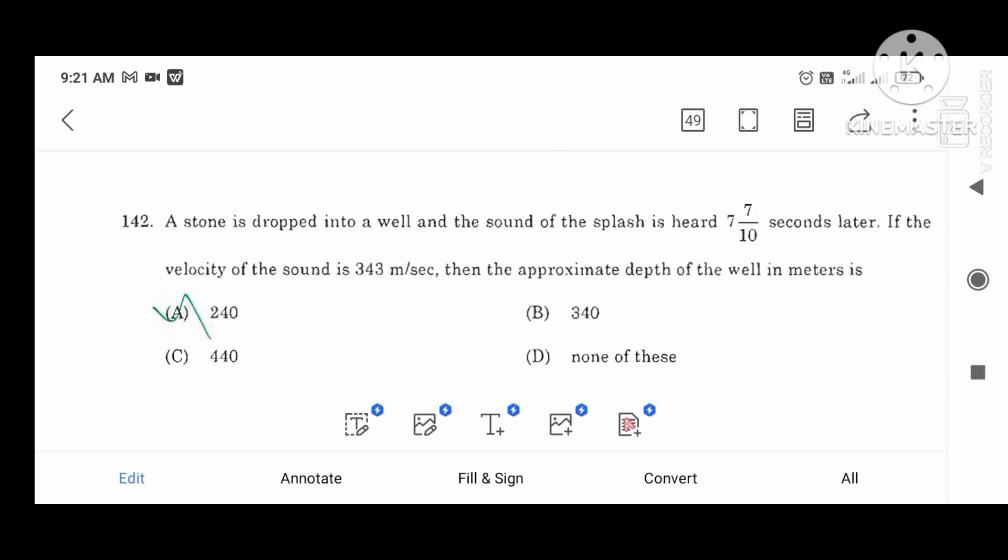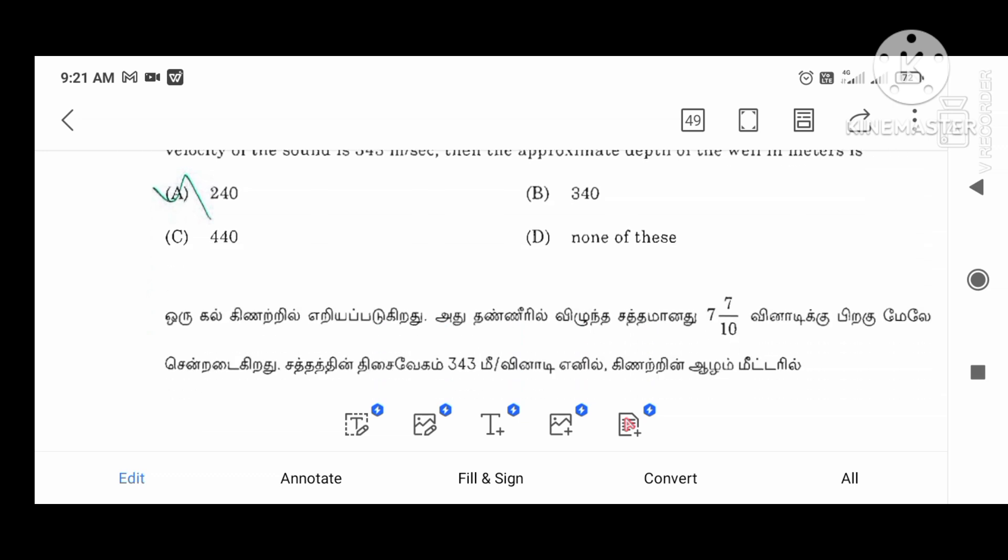And the stone is dropped into the wall. And the sound is plus 7 seconds. 7 multiplication is 7 divided by 10. So the depth of the meters is 240. If you have a problem.